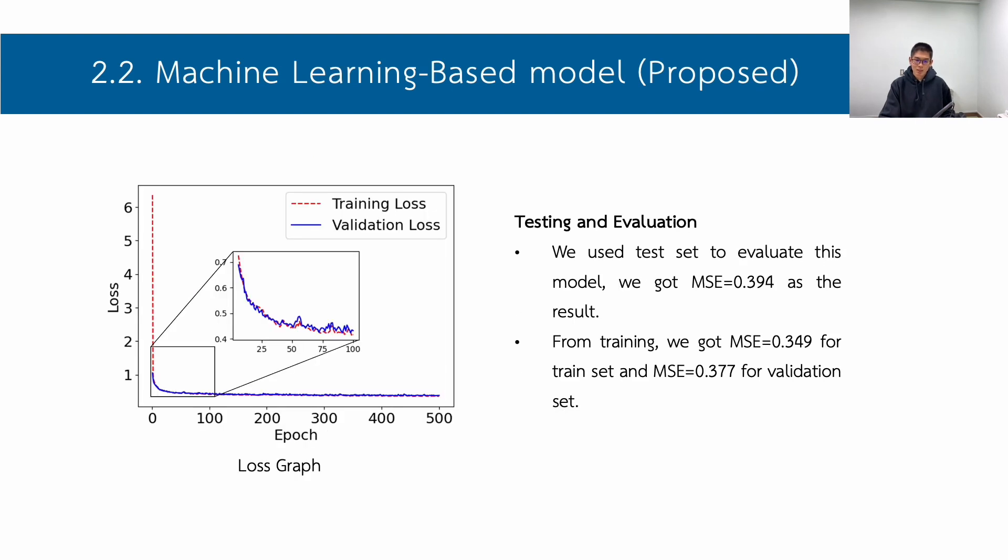In this slide, we can see loss function graph. For testing and evaluation, we use test set to evaluate this model. We got mse equal to 0.394 as the result. From training, we got mse equal to 0.349 for training set and mse equal to 0.377 for validation set, which has significance.